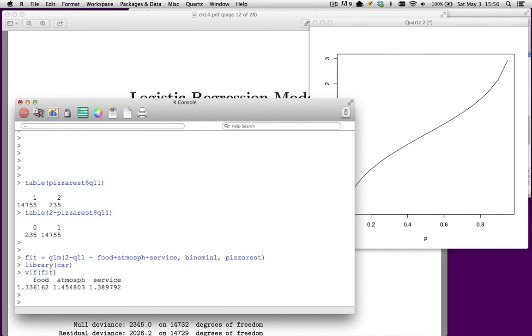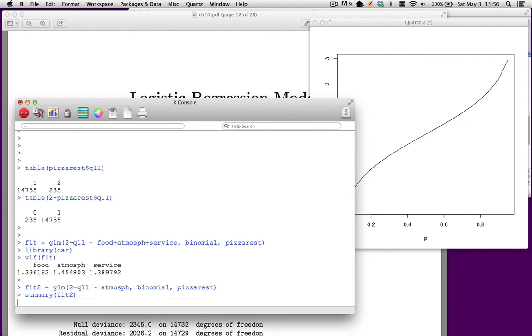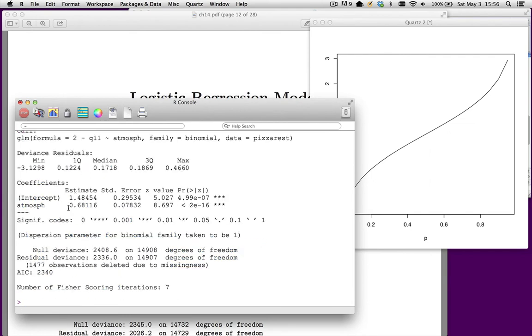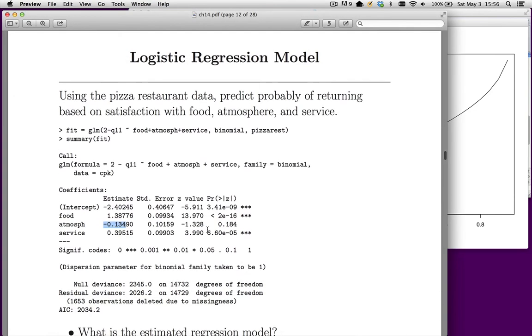Just to check this, I'm going to do fit2. Let's get rid of food and service, keeping just atmosphere. I suspect that atmosphere will now have a positive coefficient. Sure enough, it does. Notice we have a sign flip—sign flips are a classic symptom of multicollinearity.